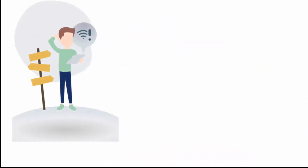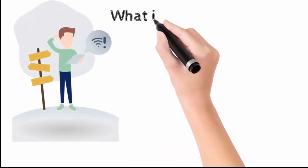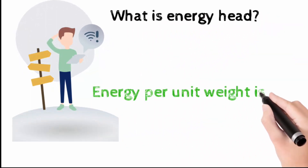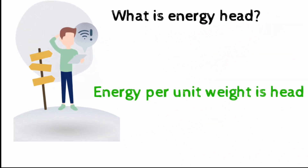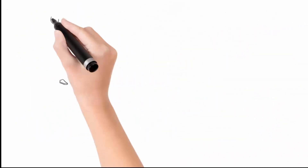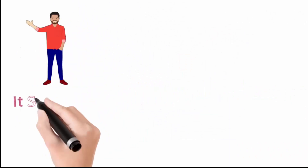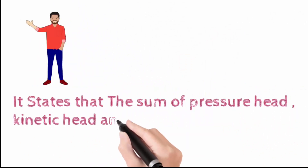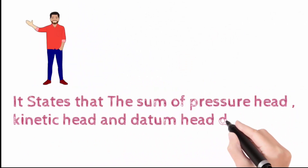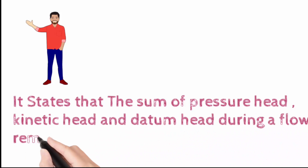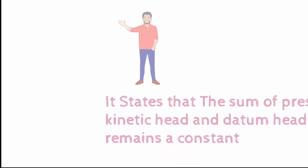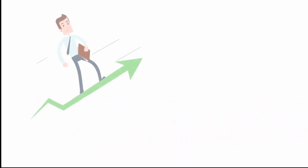What is the head? The energy per unit weight of the fluid flowing is called as energy head. Bernoulli's theorem states that the sum of pressure head, kinetic head and the datum head during a flow remains a constant. Thank you. Happy learning.